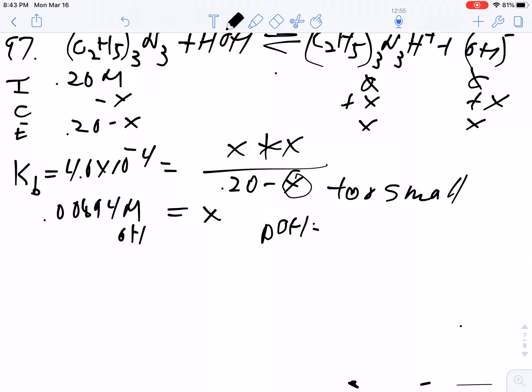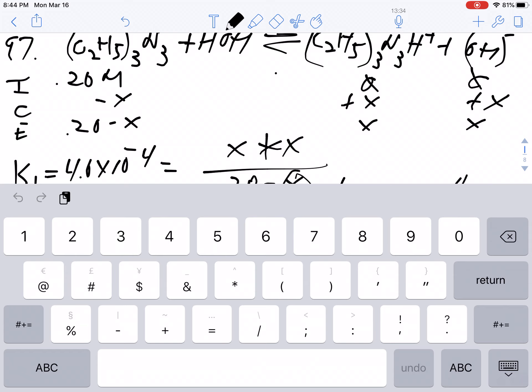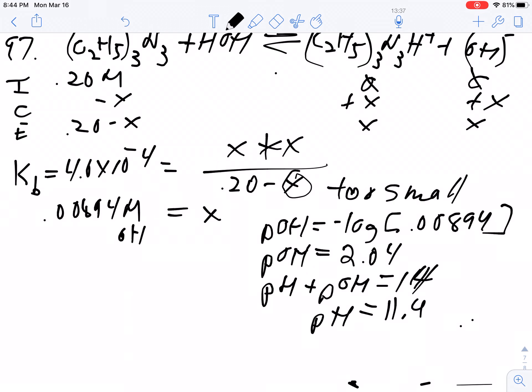So the pOH is equal to the negative log of my concentration of hydroxide. My pOH is going to be 2.04, and the pH plus the pOH has to equal 14. Therefore, the pH is going to be 11.96.